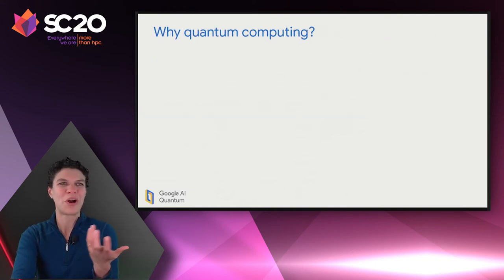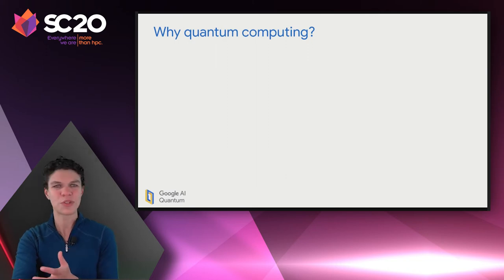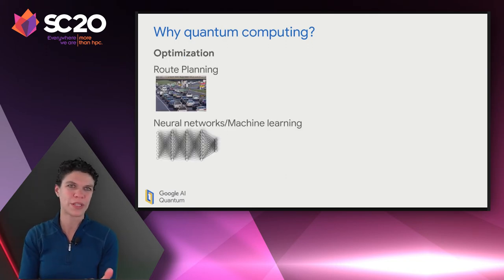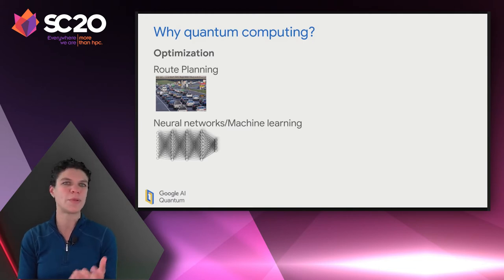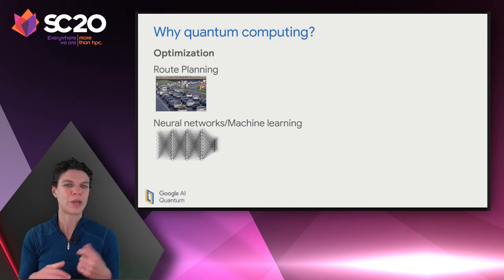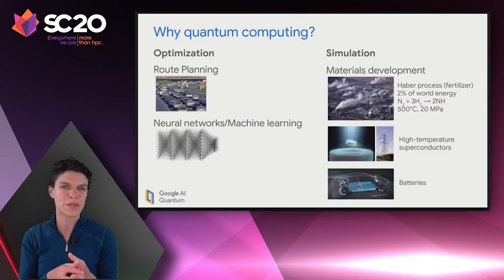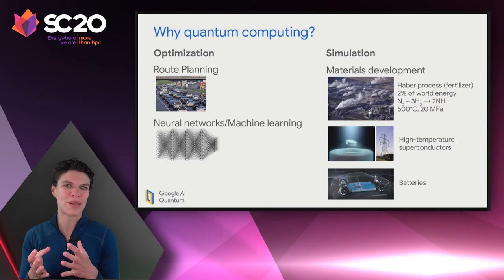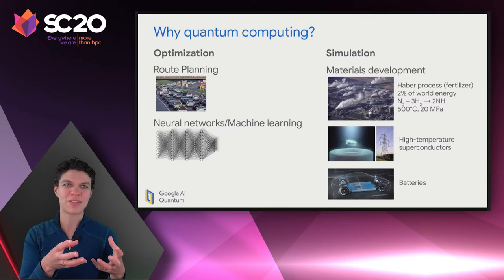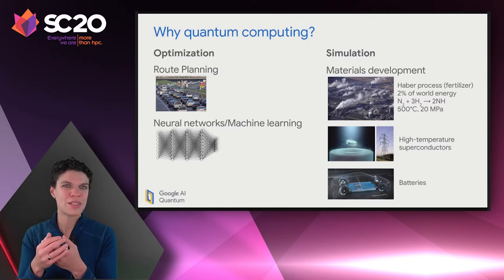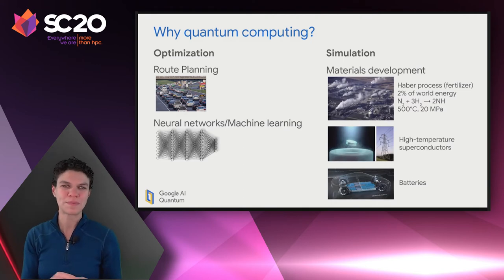Why should we work on building a quantum computer? What problems are best approached by a quantum processor? This is still an open research topic, but there are a few kinds of problems we're particularly excited about. One is optimization-style problems, which may include route planning or quantum approaches to neural networks and machine learning. There's also a desire to use a quantum processor as a simulation tool.